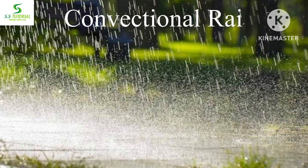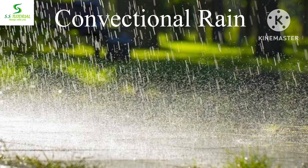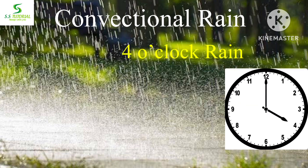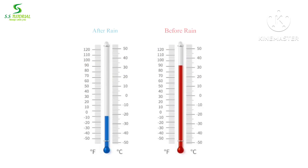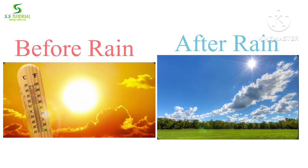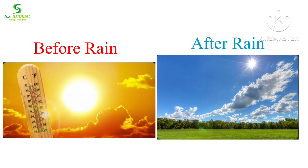This type of rainfall occurs almost every day in the equatorial region, and it occurs near about 4 PM in the afternoon. That is why this type of rainfall is also known as 4 o'clock rain. After the convectional rainfall, temperature falls suddenly, which makes comparatively pleasant weather.